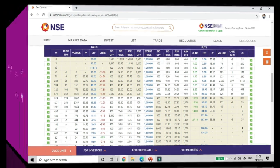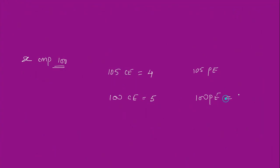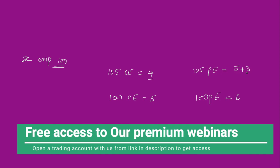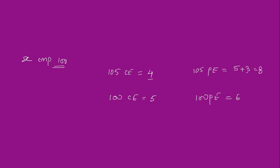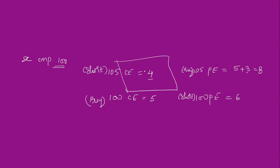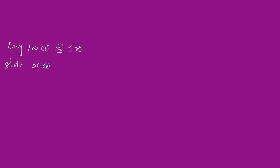Back to our theoretical example: say 100 put is at 6 rupees and 105 put is at 8 rupees (it has 5 rupees intrinsic value plus 3 rupees extrinsic). To do arbitrage, you buy the call and short the put of the same strike, then short another call and buy a put of the similar strike. So we have: bought 100 call at 5 rupees, short 105 call at 4 rupees, short 100 put at 6 rupees, and bought 105 put at 8 rupees.